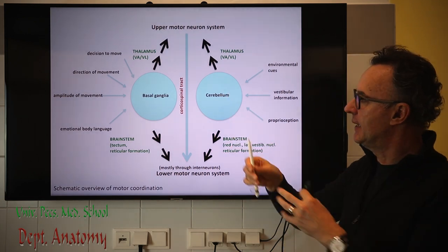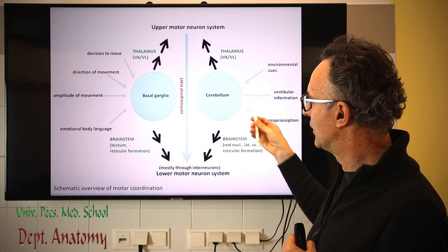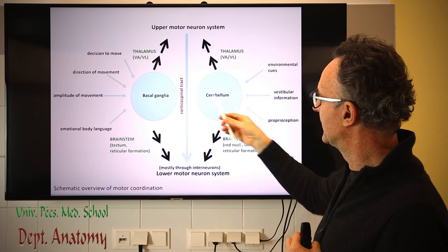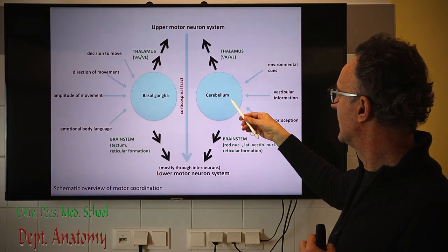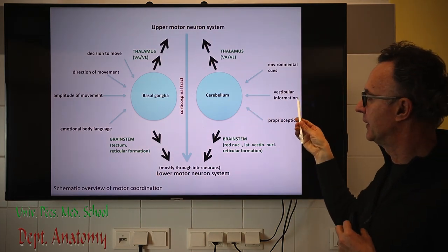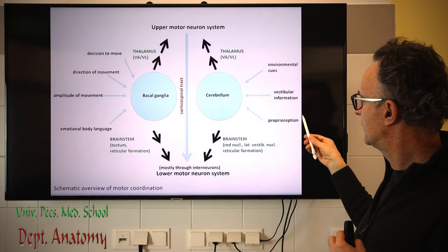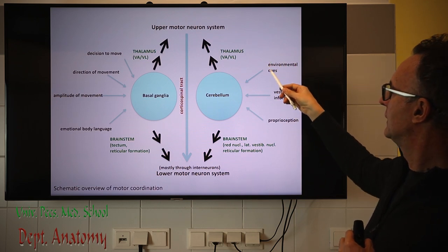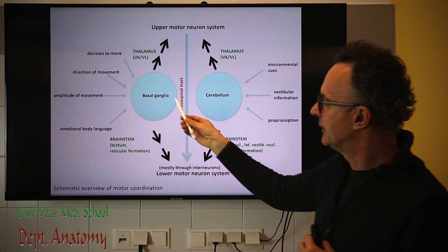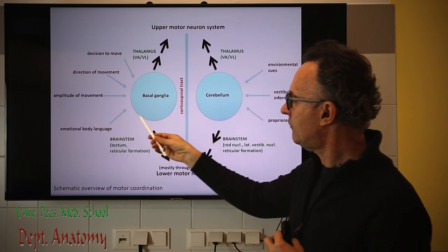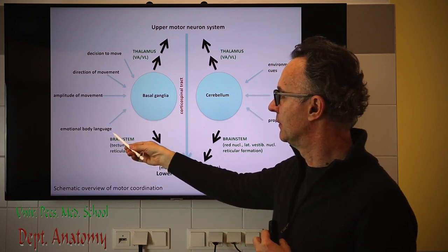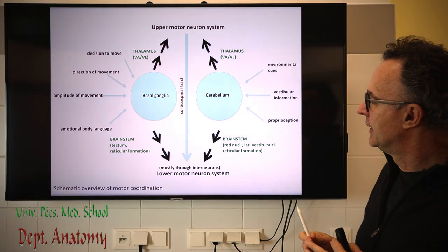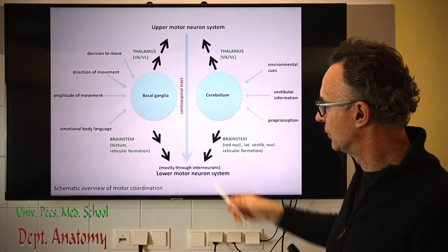Why do we need an extrapyramidal system in addition to the major control? Because we have other factors which affect the motor system through the extrapyramidal system — such as vestibular information from the inner ear to maintain balance, input from proprioceptors including muscle spindles and the GTO to control muscle tone, and environmental cues through the cortex. The basal ganglia handles expression of emotions in movements, emotional body language, amplitude, and direction of the decision to move.